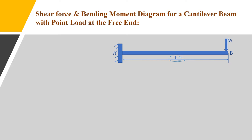This figure shows a cantilever beam AB of length L, fixed at A and free at B. To find the shear force and bending moment, we first consider a section XX at a distance X from the free end. Shear force is denoted by F and bending moment by M.